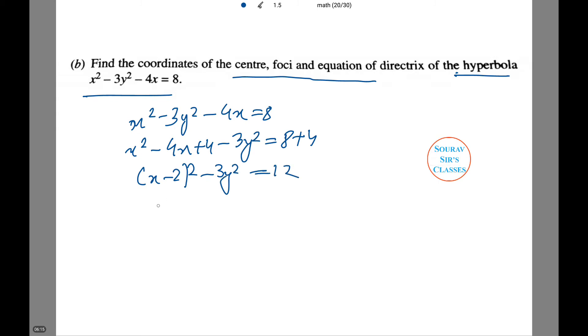This gives us x minus 2 whole squared minus 3y squared equals 12. Taking it to the general form, x minus 2 whole squared divided by 12 minus y squared by 4 equals 1.